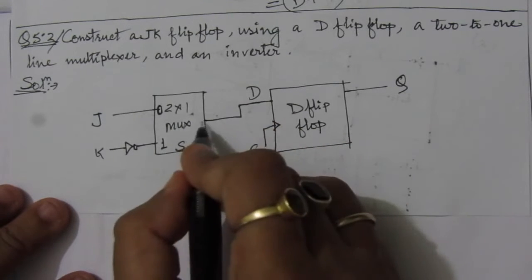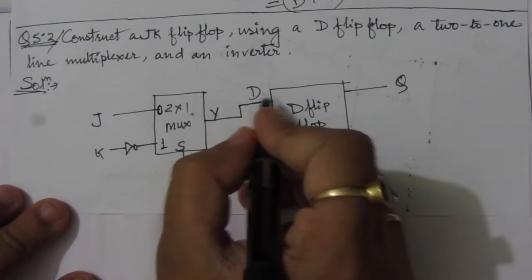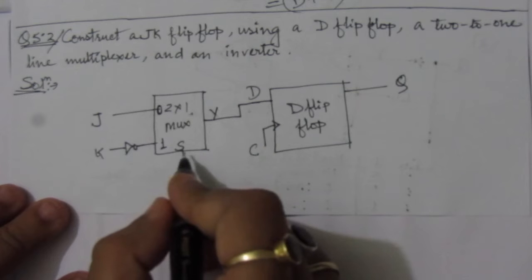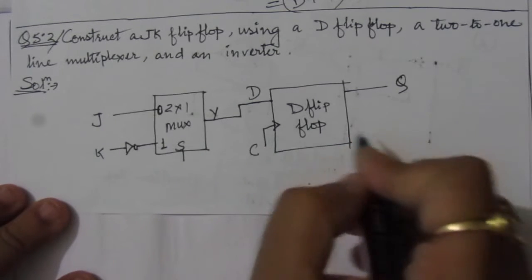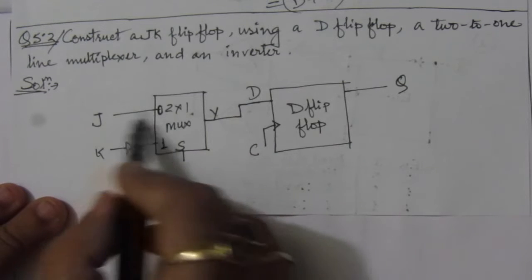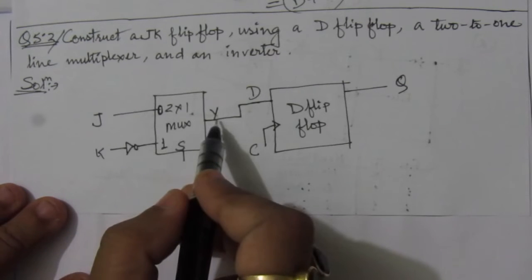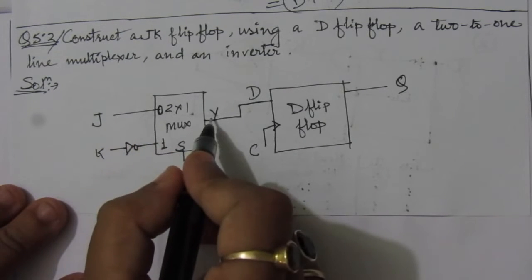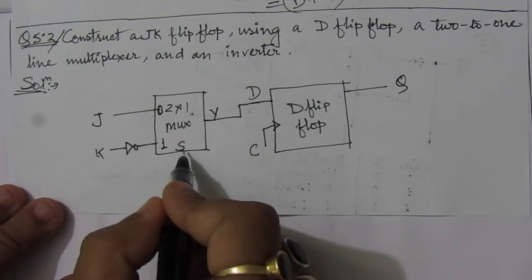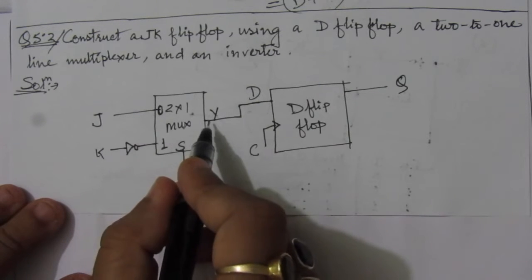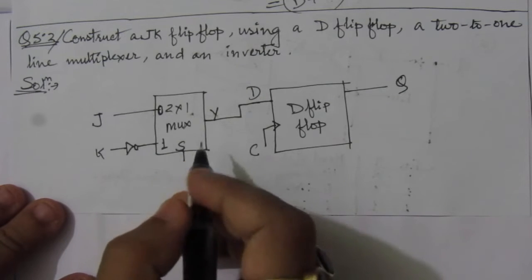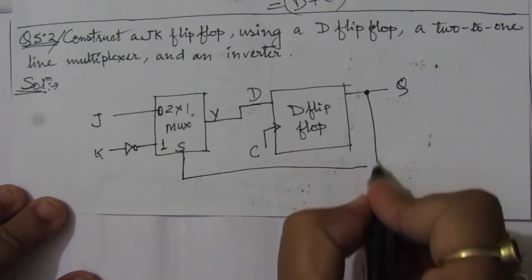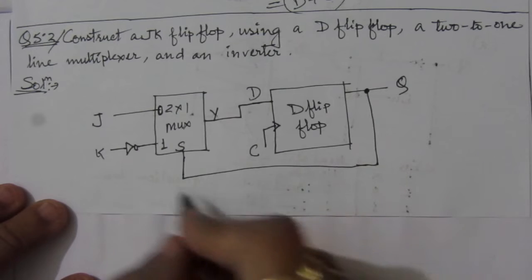The output Y is connected to the input of the D flip-flop. We need a mechanism so that the select input line can be controlled from the output Q. The select line decides which input line is connected to the output: when S equals 0, the I0 (J) line is connected to the output; when S equals 1, the K line is connected to the output. So we connect the select line S to the present-state output Q.